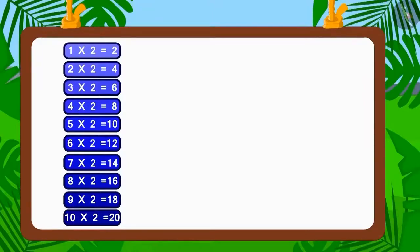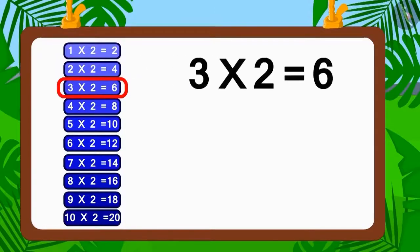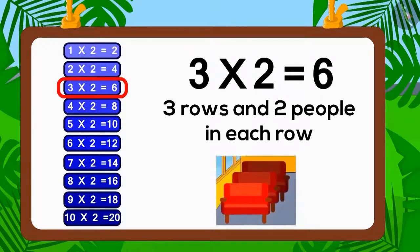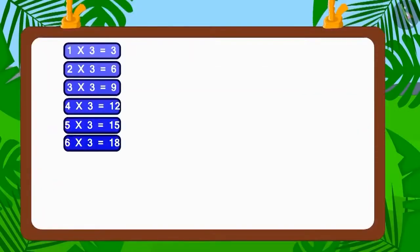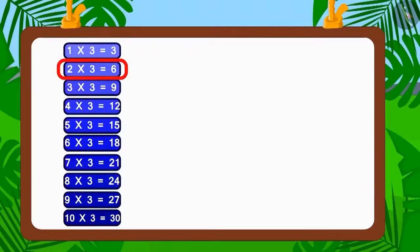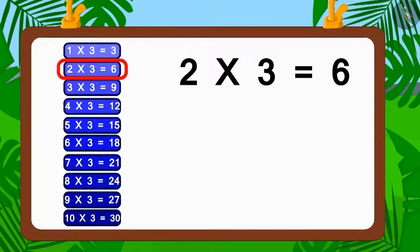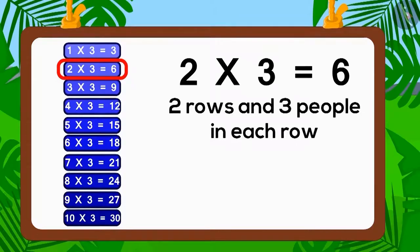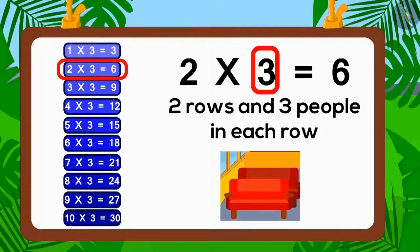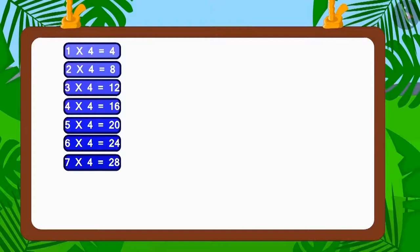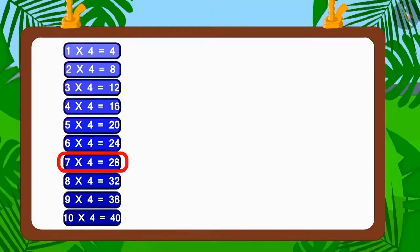Does the number six appear in the table of two? Yes, three multiplied by two is six — therefore two is a factor of six. So if two people sit in each of three rows, six people would be seated. Now let's look at the table of three — does the number six appear? Two multiplied by three is six, therefore three is a factor of six. So if three people sit in each of two rows, six people in total would be sitting on the bus.